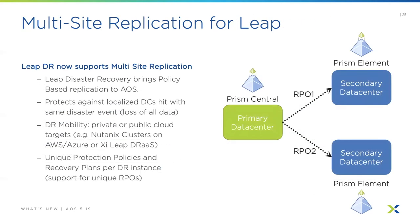Multi-site replication for Leap is also a new feature. Leap is our automated DR for Nutanix infrastructure. New features include DR mobility to private or public cloud targets — you can use Nutanix Leap to automate DR to Nutanix clusters, AWS, Azure, or Xi Leap disaster recovery as a service. It brings policy-based replication to AOS, protects against localized data center disasters with loss-of-data scenarios, and provides unique protection policies and recovery plans per DR instance with support for unique RPOs.